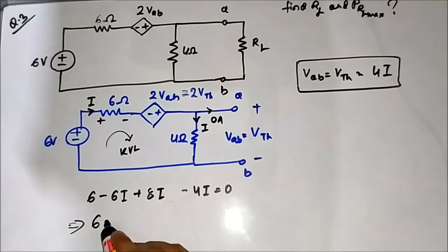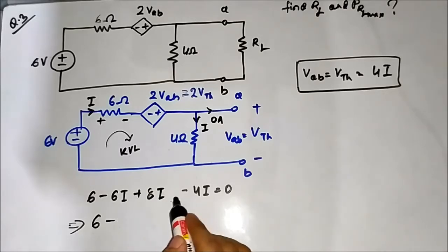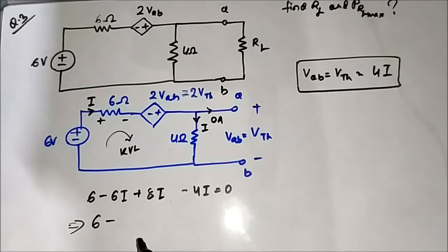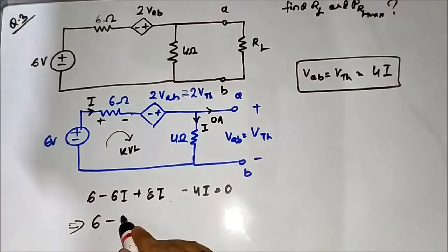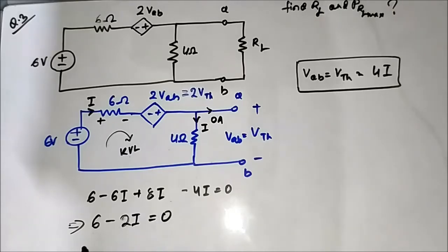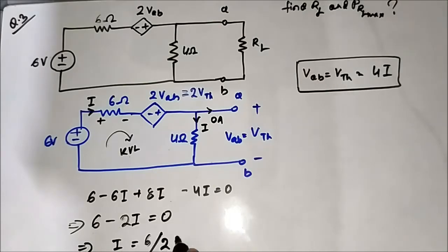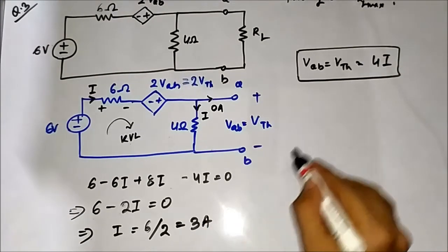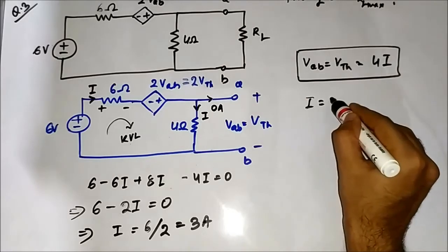Simplifying: 6 minus 6I plus 8I gives 6 minus 2I equals zero. That implies I equals 6 divided by 2, which equals 3 ampere. So I is equal to 3 ampere.